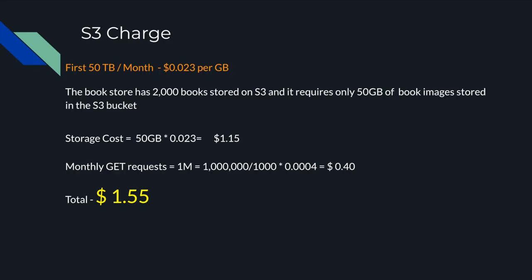Finally, let's look at our S3 bucket charges. We have two S3 buckets using standard storage. Imagine we have 2,000 books and the total image size is about 50 GB. For S3 standard storage up to 50 TB, you're charged $0.023 per GB, so 50 GB × $0.023 = $1.15. We're also charged for GET requests at $0.0004 per 1,000 requests. For 1 million GET requests: 1,000,000 ÷ 1,000 × $0.0004 = $0.40. Total S3 charges: approximately $1.55.